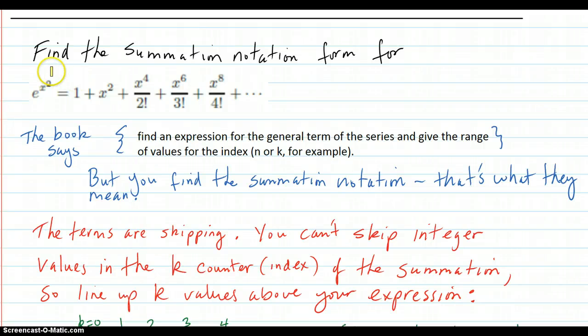Here's another example. Find the summation notation form for this series. The book says it this way: find an expression for the general term of the series and give the range of values for the index. Well, what they're really talking about is find a summation notation. That's what they mean. So that's what we're going to do.